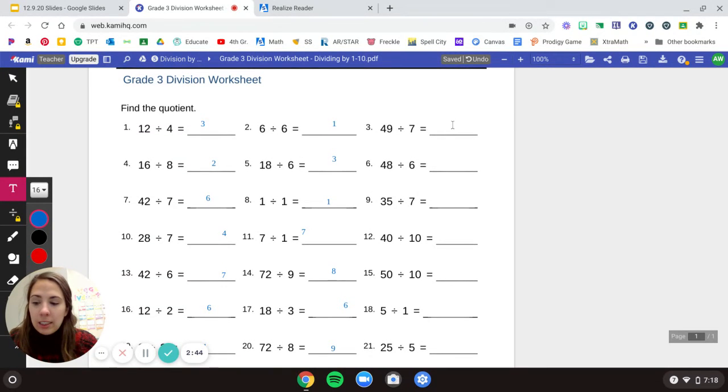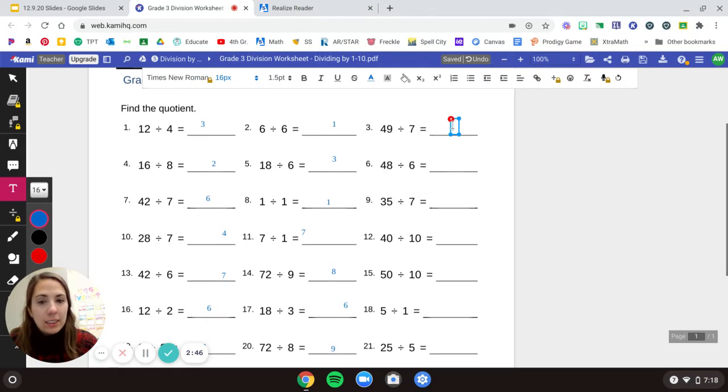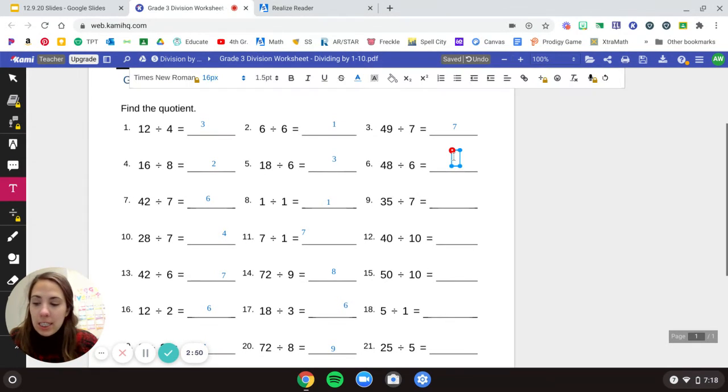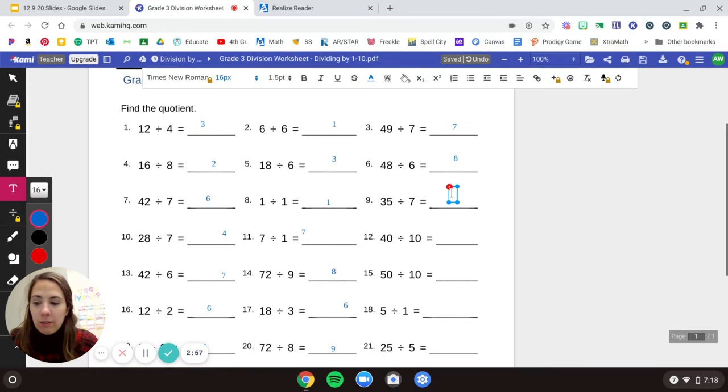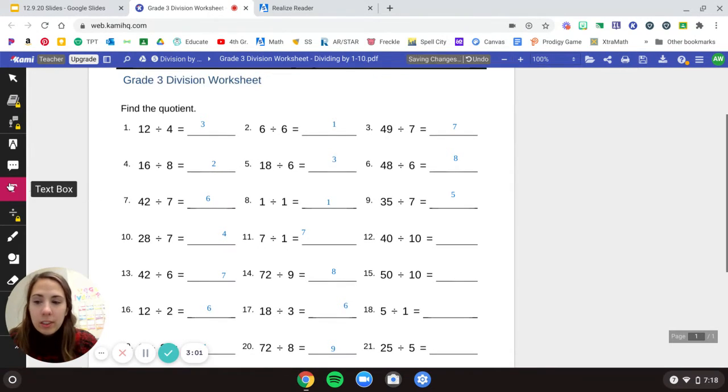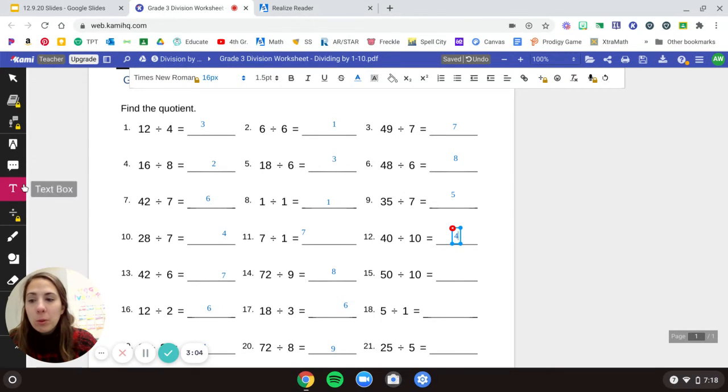49 divided by 7 is 7, because 7 times 7 is 49. 48 divided by 6 is 8. 35 divided by 7 is 5. 40 divided by 10 is 5.